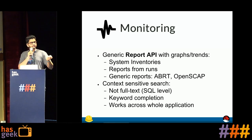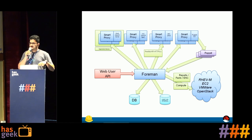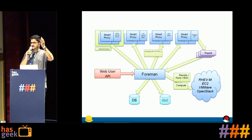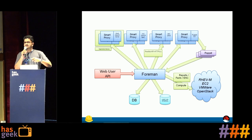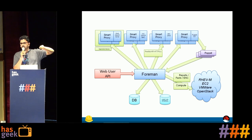This is the Foreman architecture. Smart proxies allow you to have one centralized Foreman server and place smart proxies in remote locations — for example, in the US — where they provide DHCP, DNS, and TFTP services. You can use a smart proxy in any location to provision machines there while running a single Foreman instance. This gives Foreman a distributed architecture that couples with Puppet for configuration management.